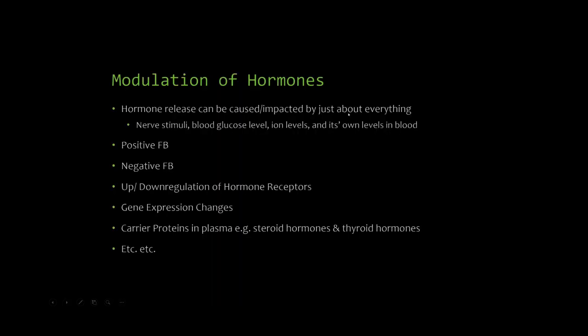When it comes to modulation of hormones and regulation, it is literally never ending, like the regulation of DNA transcription. Hormone release can be caused or impacted by just about everything: nerve stimuli, blood glucose levels obviously, ion levels like sodium, and its own levels. Because if its own levels get too high, it'll go and cause negative feedback to slow down the production. Positive feedback is a lot rarer. Classic example that you probably already know that you'll see again is oxytocin during labor. It's a feed-forward mechanism for contraction of the uterus to give birth.